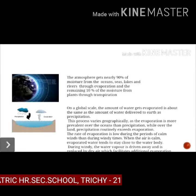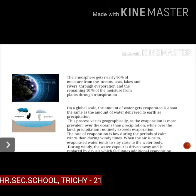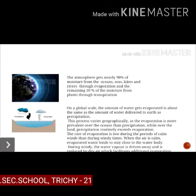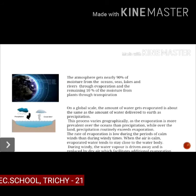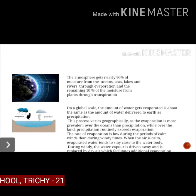The atmosphere gets nearly 90 percent of its moisture from oceans, seas, lakes, and rivers through evaporation. The amount of evaporation is about the same as the amount of water delivered to the earth as precipitation. This process varies geographically — evaporation is more prevalent over the ocean than precipitation, while over land, precipitation routinely exceeds evaporation.